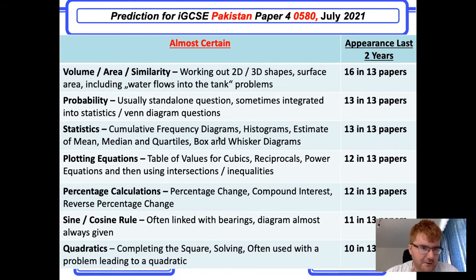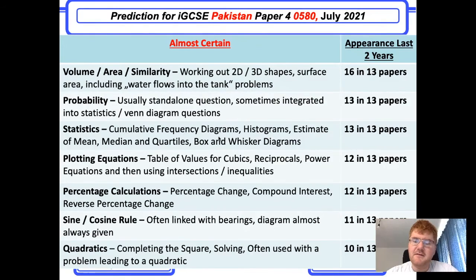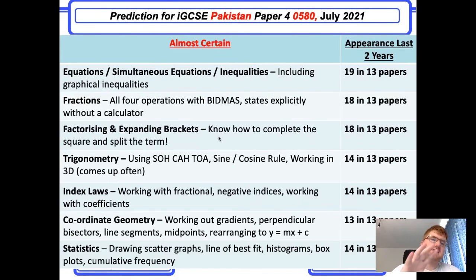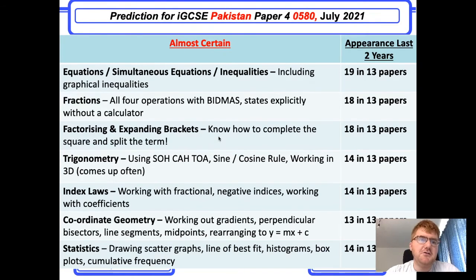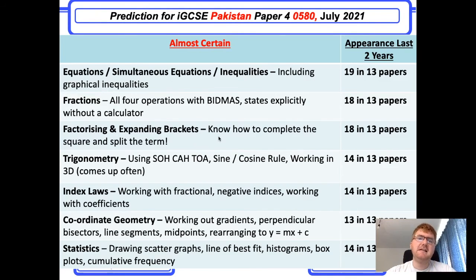Start with the list you see in front of you and make sure you know these seven topics very well, then think about how they could be tested. Fractions will probably not be on the test so you can scrub that out, but think about how they can integrate the skills shown here into those Paper 4 questions. In summary, be prepared for the two slides I've shown you — those topics will make up essentially 50–60% of your paper. Good luck Pakistan, and I wish you all the best for the exams.